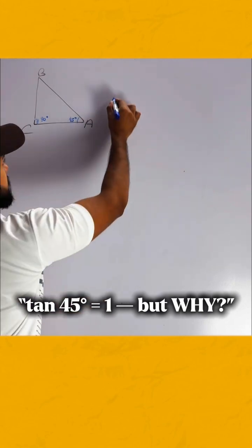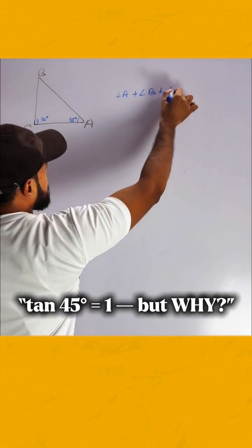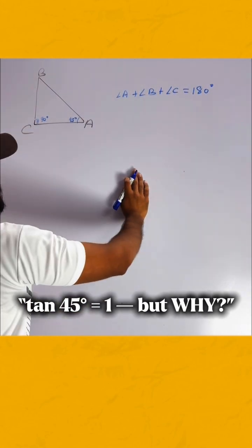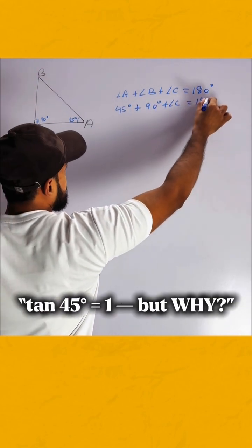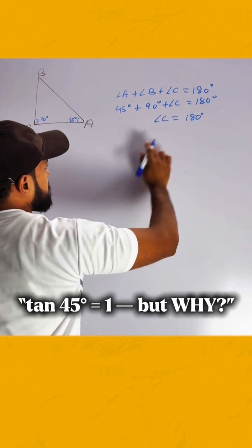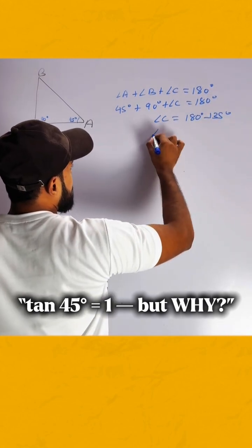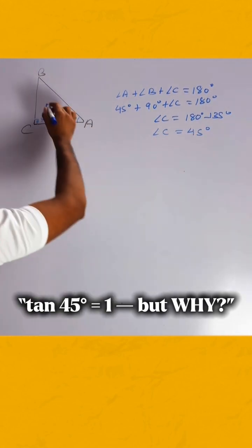We all know that the property of triangles: the sum of all internal angles of a triangle is 180 degrees. Angle A is 45, angle B is 90, plus angle C equals 180 degrees. Angle C equals 180 degrees minus 135 degrees, which is also equal to 45 degrees.